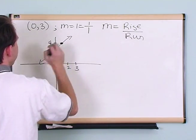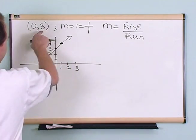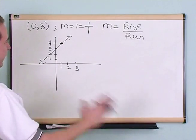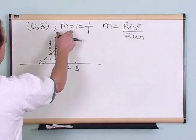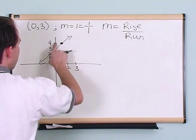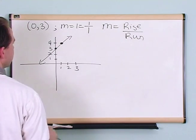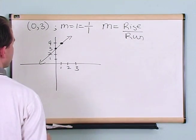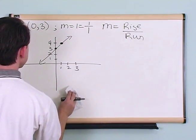There's my line — just like that. Any time you have a slope and one point, you've got the line defined. Put your point down, pick up your slope, rise the number of units, run the number of units, and you're done.